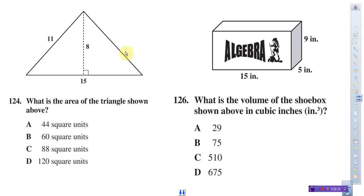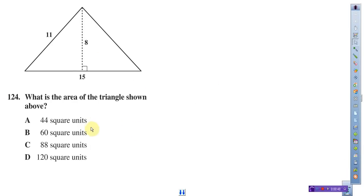We're going to be talking about the area of a triangle, we're going to need to memorize that equation, and then also the volume of a box, or any kind of cube, just like this one here. So, let's get right into it. Number 124 here, it says, what is the area of the triangle shown above, and then they give you 15 as the base, 11 as a hypotenuse here, and then 8 as the height.